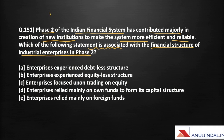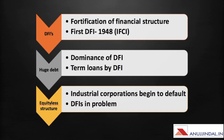Phase 2 started from 1951 and lasted till the mid-80s. During the strengthening of the financial structure, Development Financial Institutions were established. The first DFI was established in the year 1948 and that was IFCI, that is Industrial Finance Corporation of India.